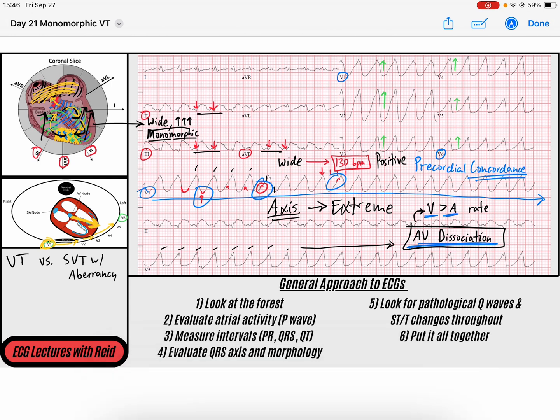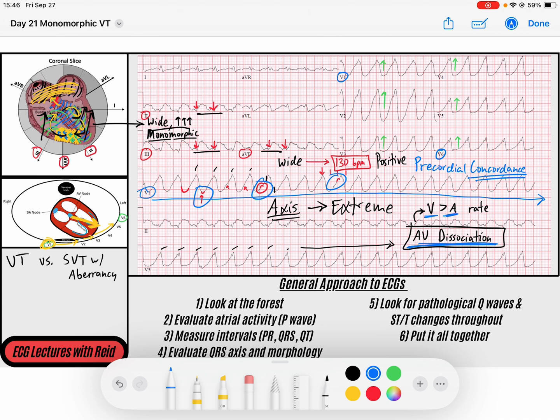Big takeaways from this video: a lot to unpack with VTAC, and we're going to get another rep on VTAC tomorrow. The key is understanding that there is a reentry pathway within the ventricles creating a monomorphic wide complex QRS occurring rapidly, producing changes that cannot be explained by normal AV conduction — because there is no AV conduction. I hope you start to develop an approach to ventricular tachycardia, how to rule it in and how to rule it out. If you have any questions, throw them in the comments. Enjoy the rest of your day — take care, thanks for watching.